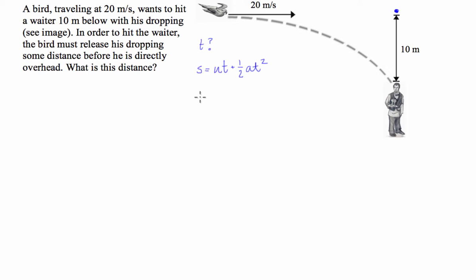We know that the distance s is going to be 10, is equal to one half a, which is 9.8, t squared. So half of 9.8 is 4.9, and then we're going to divide that by 10 and take the square root. So I hope you can follow my algebra. But t is going to be equal to the square root of 10 divided by 4.9. And that's equal to 1.429 seconds.